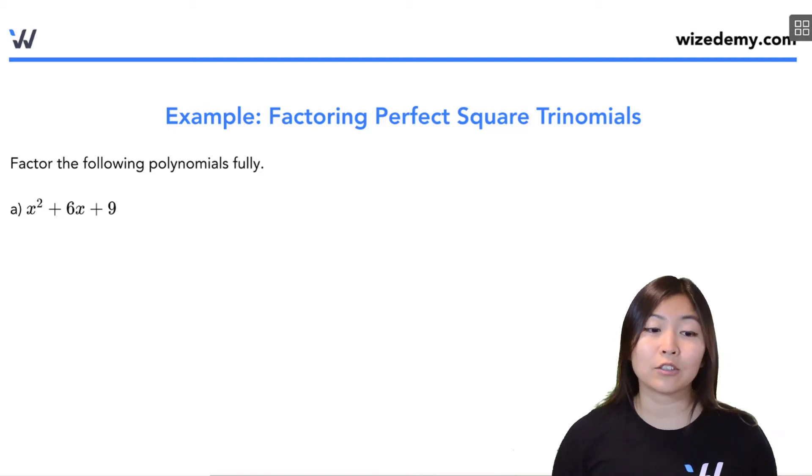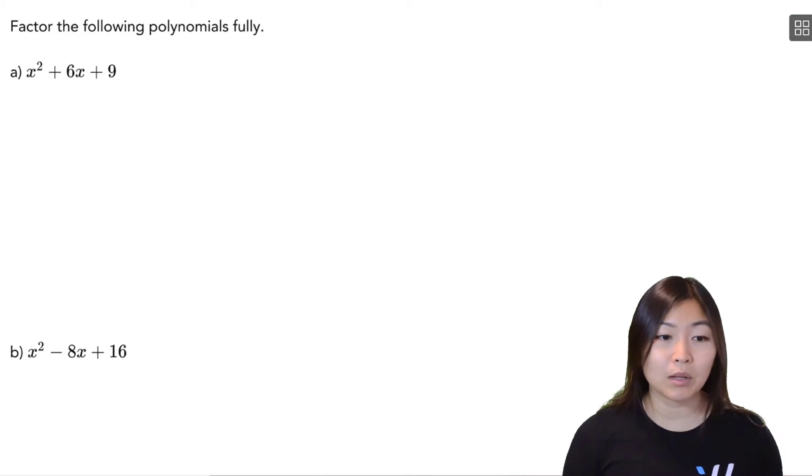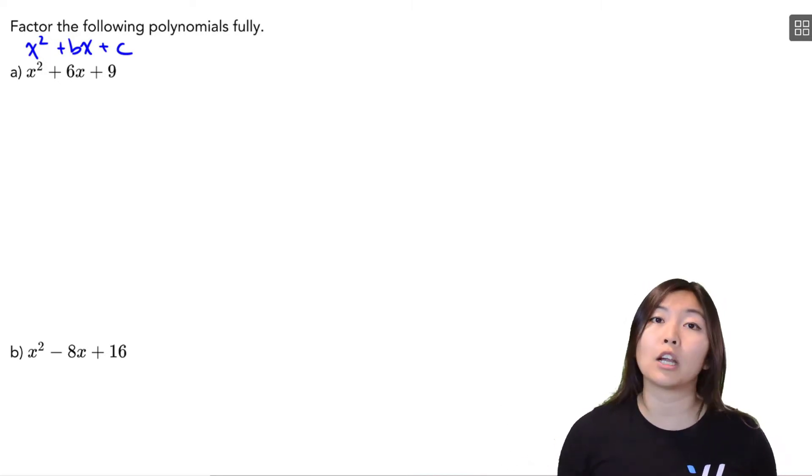In this example, you were asked to factor the polynomials fully. So in part A, we have x squared plus 6x plus 9. Notice that this is in the form x squared plus bx plus c. So one way to factor this is to do what we normally have done for simple trinomials.